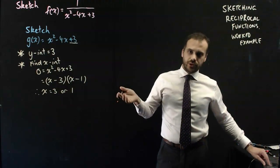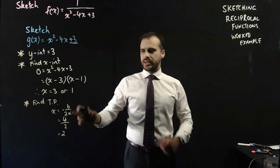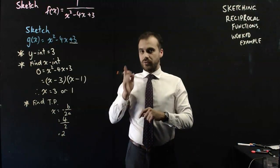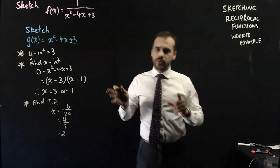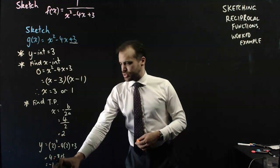What about turning point? Now, given it's a quadratic, we can use negative b over 2a. Subbing that in, we get 2 as the x-coordinate of our turning point. So, the y-coordinate of our turning point. Subbing 2 into the original equation,